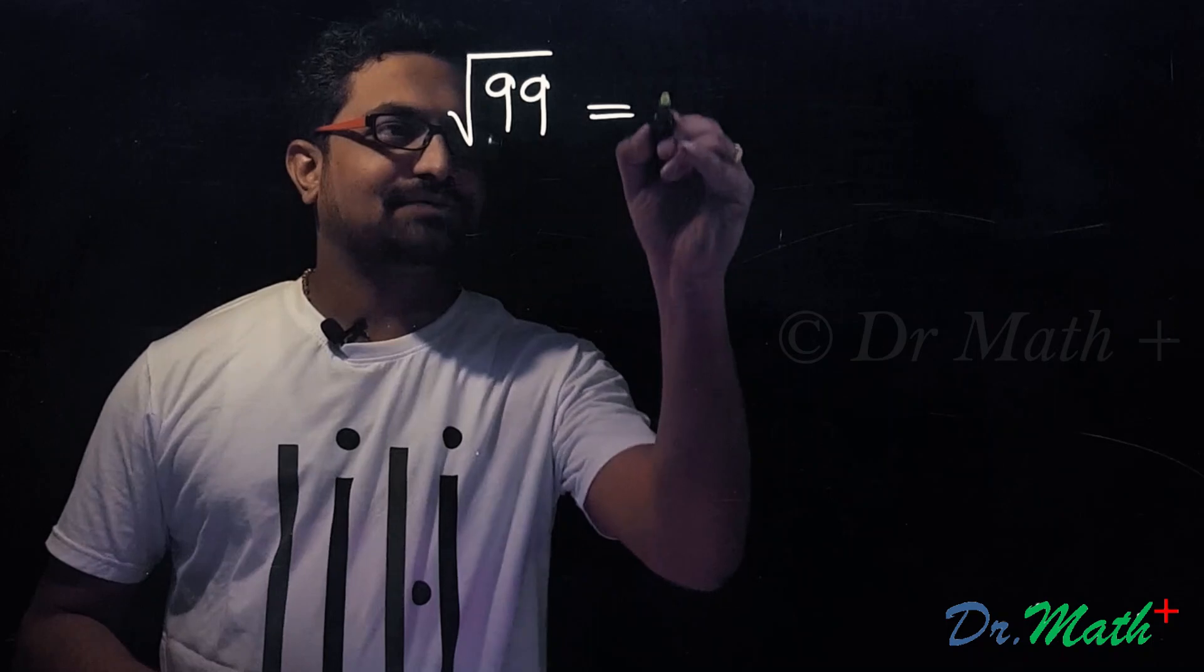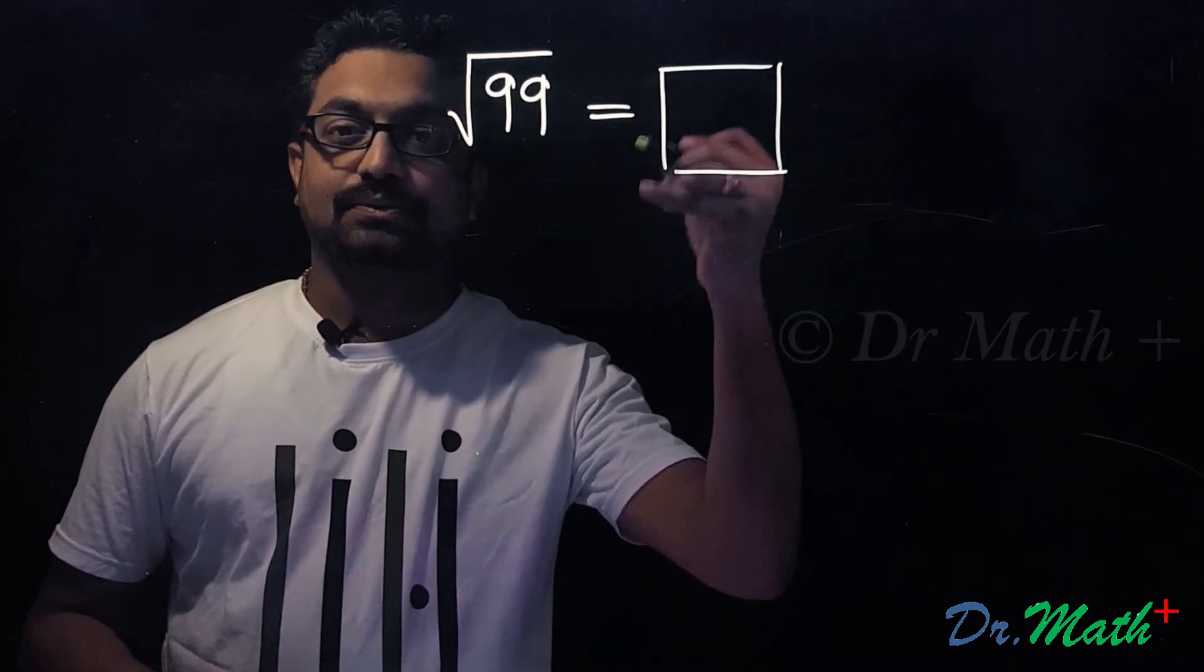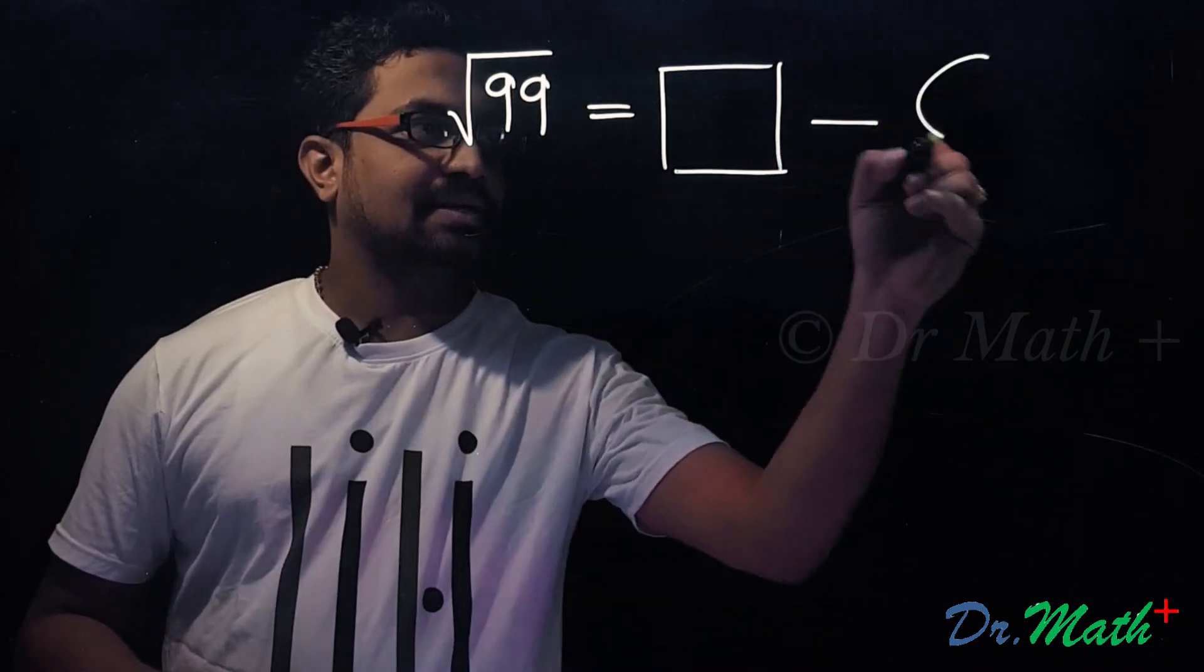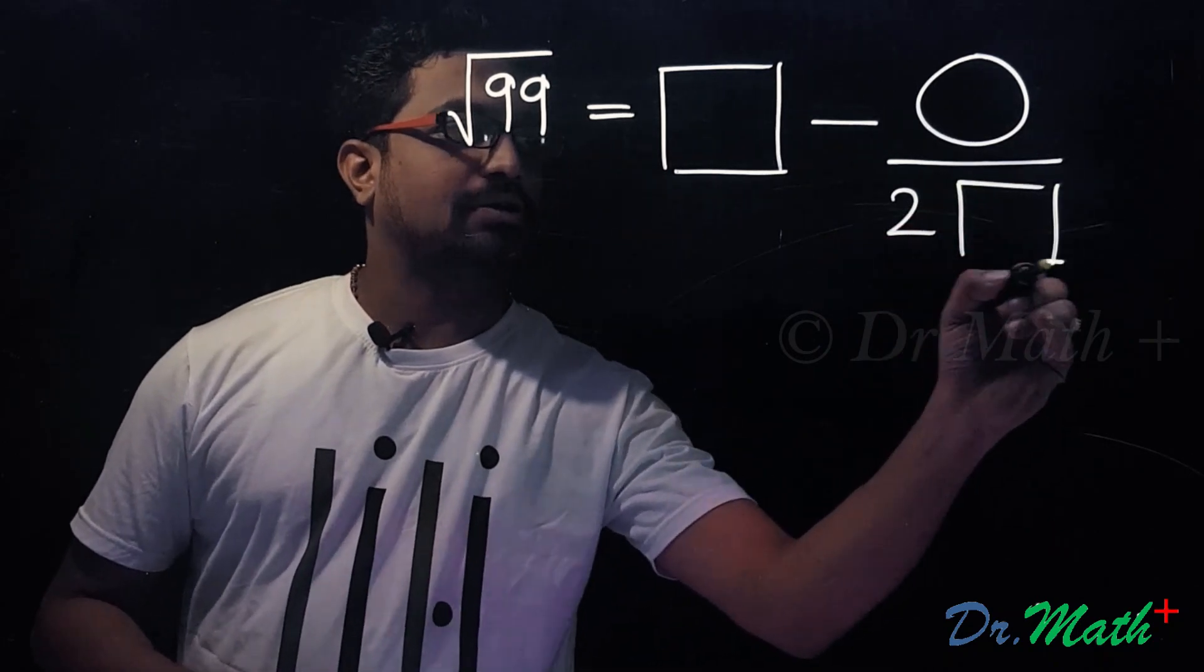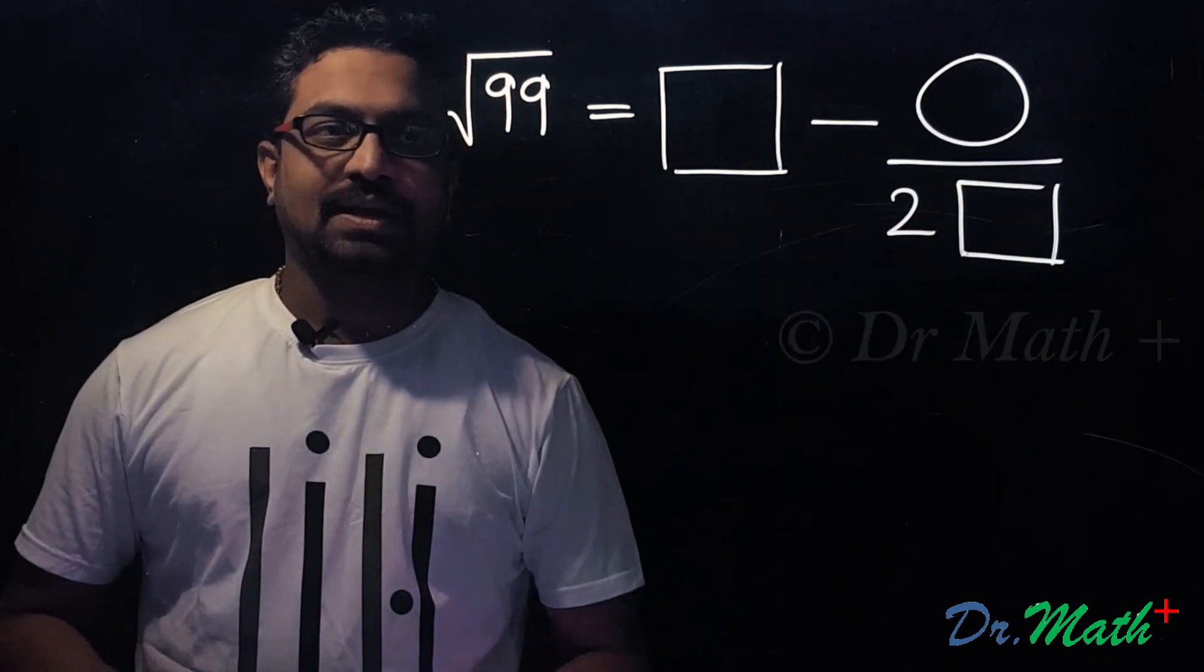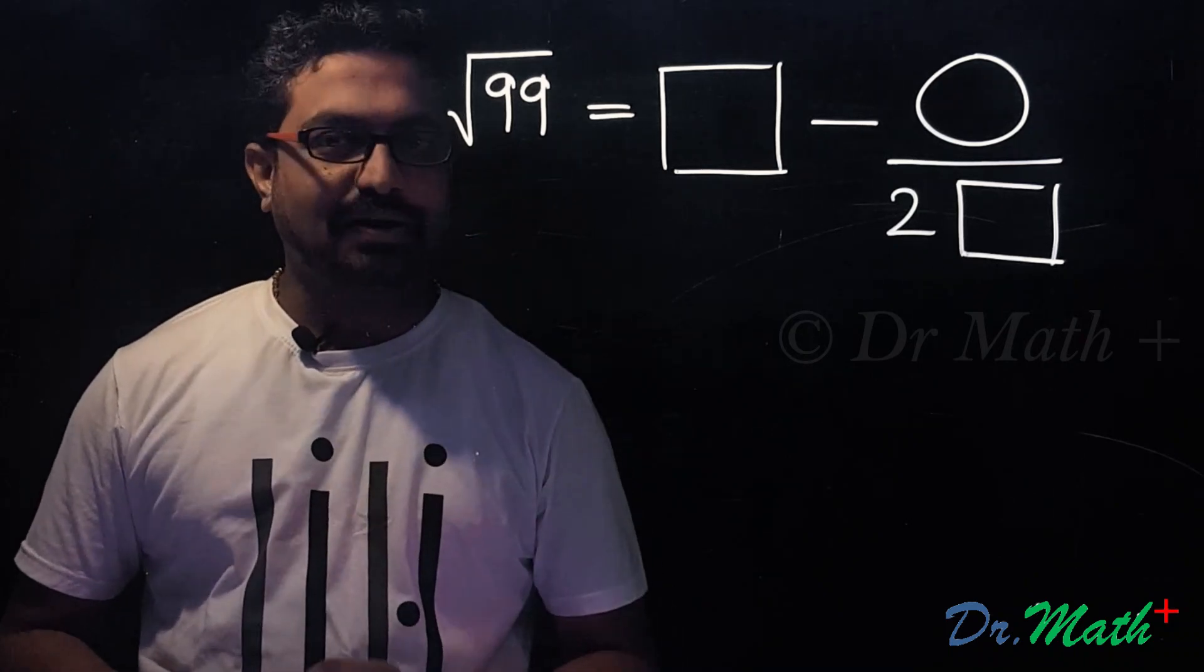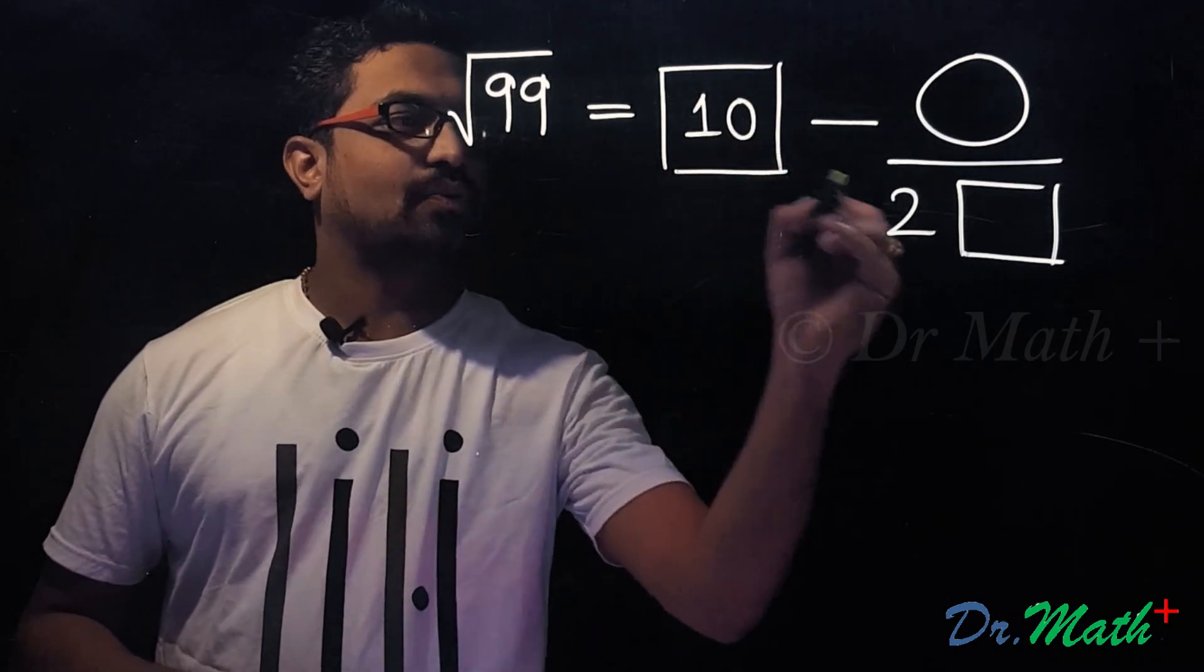As I have told you, just need to draw a square. Now since it is a little less, let me write minus a circle, 2 and a square box. Square root of 99 is very close to square root of 100, which is 10, so let me write 10 in the square box.